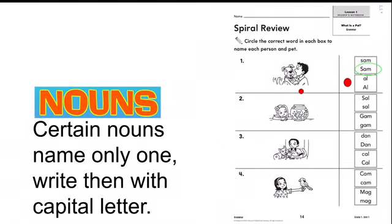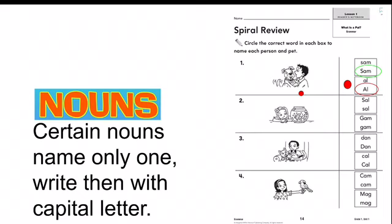Now that you circle it, let's see. Al. Al is the name for the boy. It's for only one. And it needs to be circled. The one with the capital letter. Look for the one with the capital letter and circle it. Very good. You circle Al with capital letter.